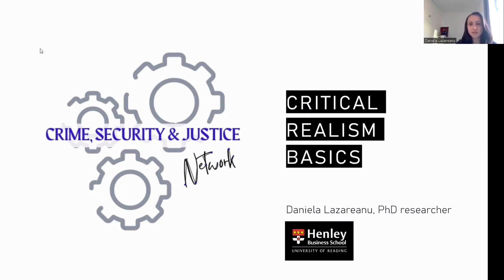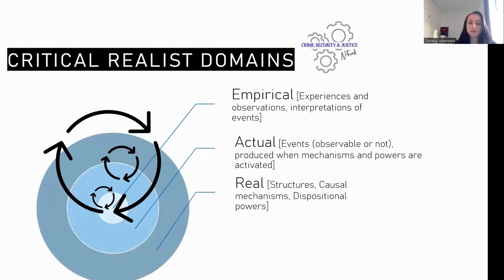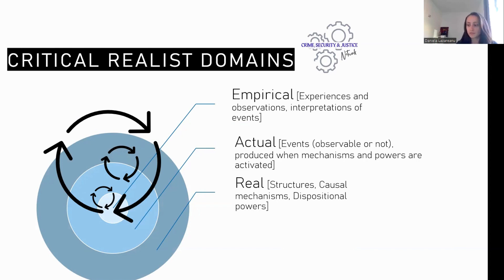In essence, critical realism is a research philosophy credited to Roy Bhaskar and a few other British scholars — a research philosophy which assumes a layered nature of reality. These layers, also described as the domains of reality, are: the empirical, consisting of experiences, observations, and interpretations of events which we can capture through our senses; the actual, which consists of events we may or may not perceive; and the real, where structures, causal mechanisms and dispositional powers exist, all of which can generate the events in the actual and the experiences in the empirical domain respectively.